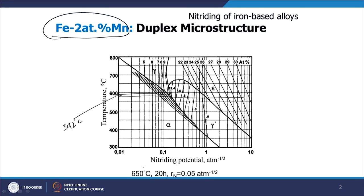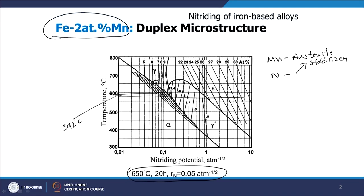Now we look at nitriding conditions at 650 degrees Celsius with a nitriding potential of 0.05, which places us just into the gamma region of the Lehrer diagram. It is therefore expected that we should allow the growth of austenite. In this case, the element is manganese, which is known to be an austenite stabilizer. The Lehrer diagram is truly applicable only for pure iron, but since manganese has an austenite stabilizing effect, we expect the phase borders to shift towards lower nitriding potential, meaning the chosen point could already be in the gamma region for the iron-manganese alloy.